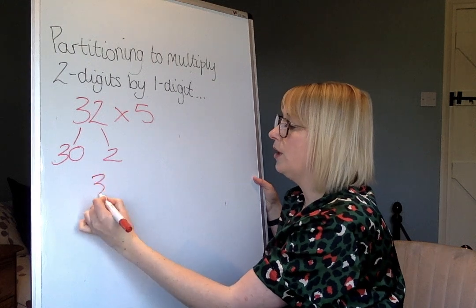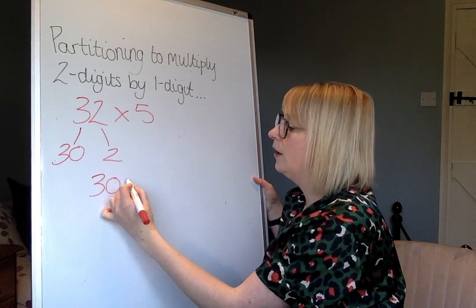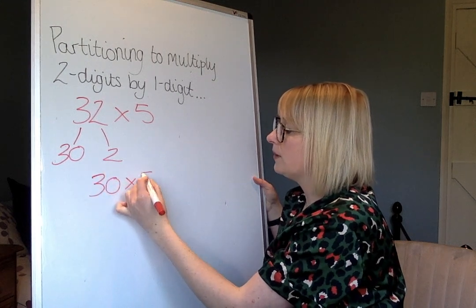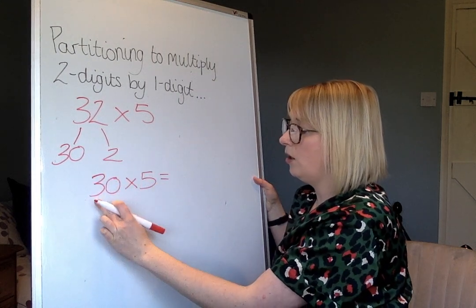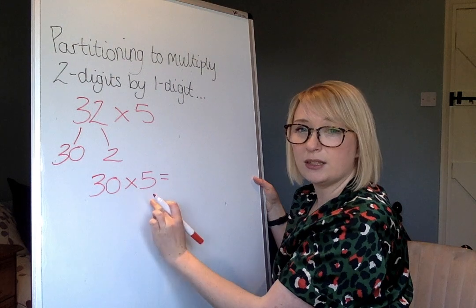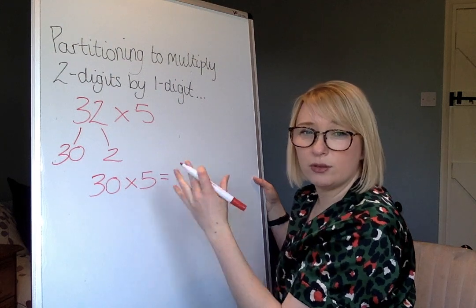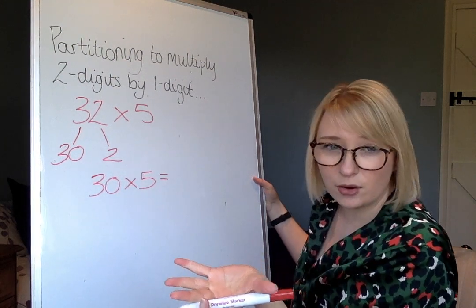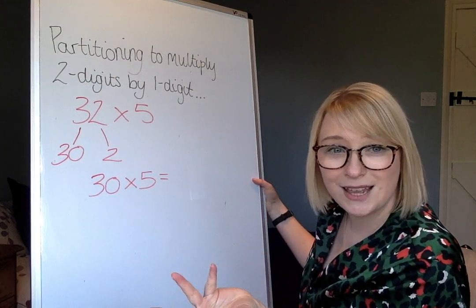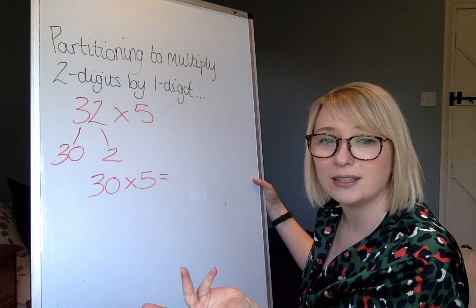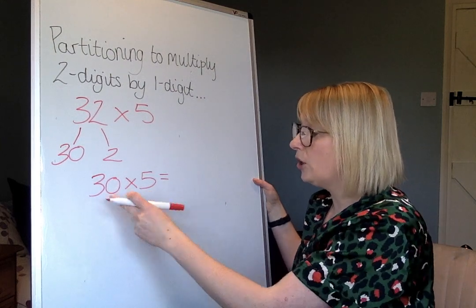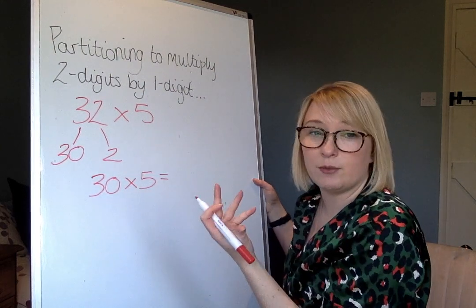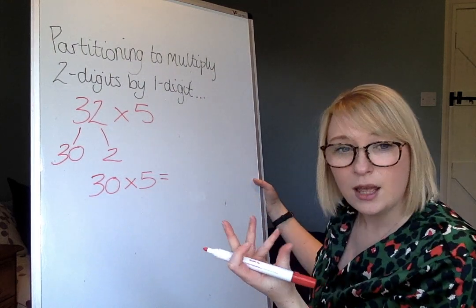Step two is to multiply your tens digit by the integer that you're multiplying by. So we're going to do 30 times 5. 30 times 5 you can do in many different ways. Please watch the previous video on how to multiply by 10 to help you with that skill. For example, I could just do 30 times 5 mentally.